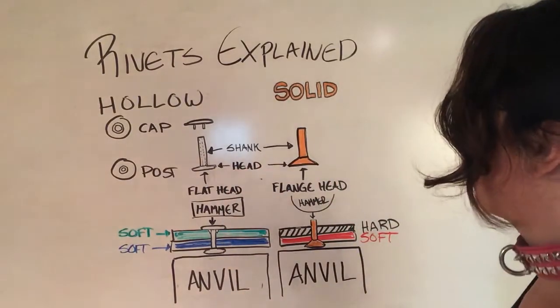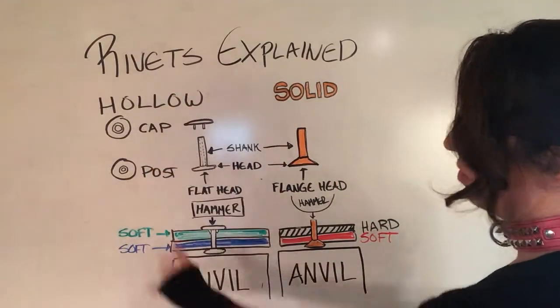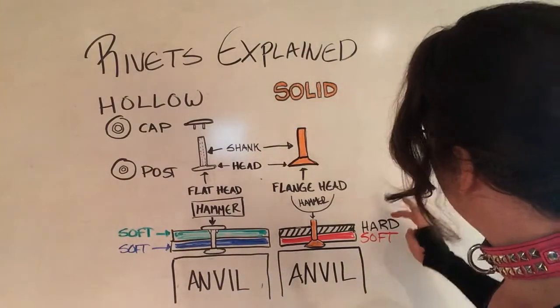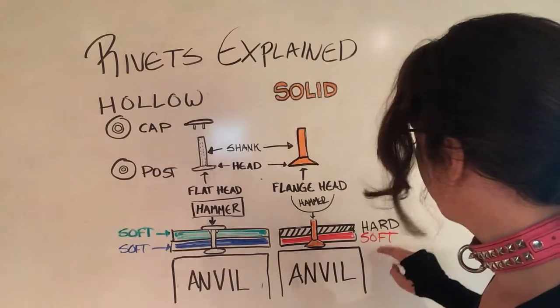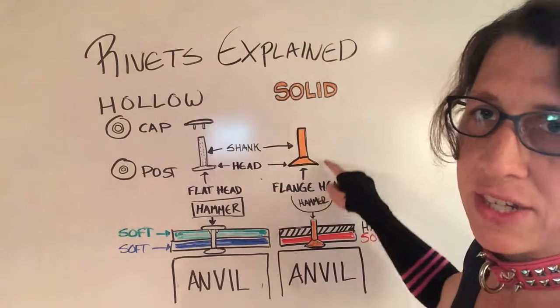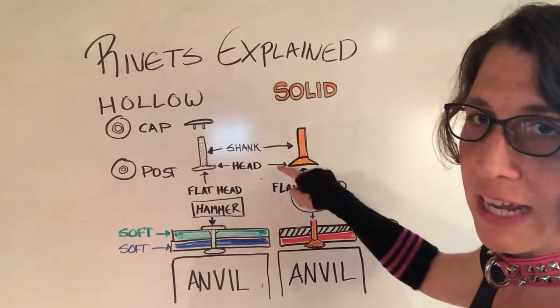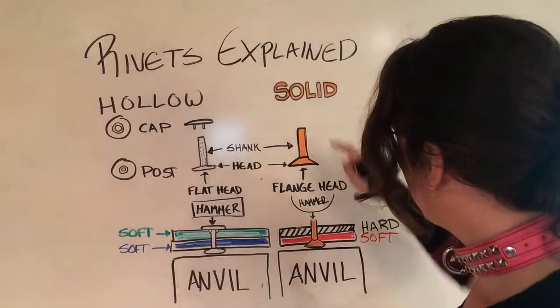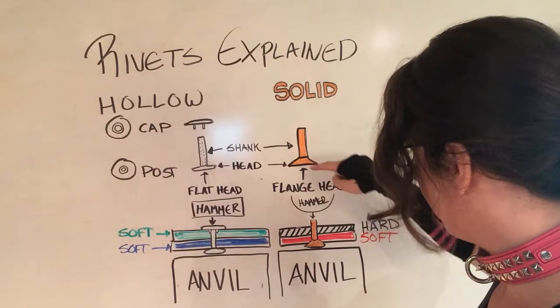So the distinctions here we're looking at is with hollow, you're always joining soft to soft. And with solid, you're joining some harder material to the softer material. And the orientation of the rivet, this wide head flange, is going to allow the softer material to be supported when you hammer over this flange head.